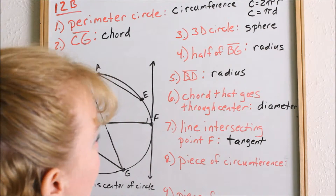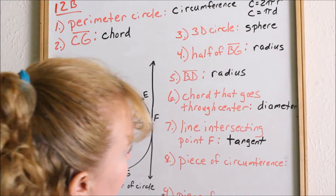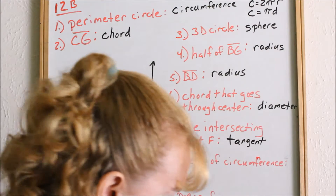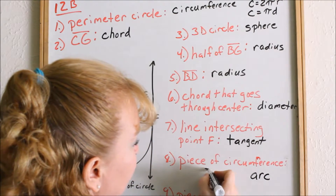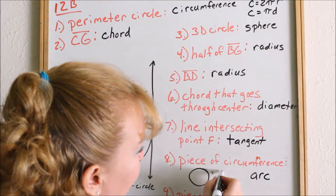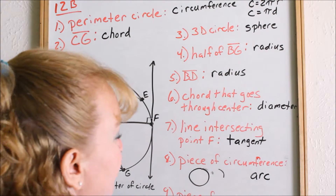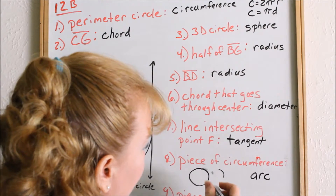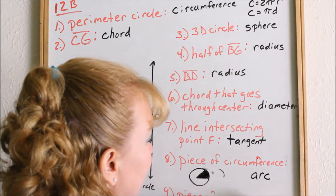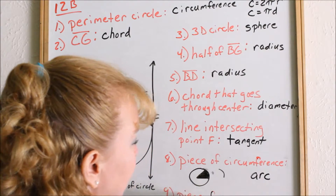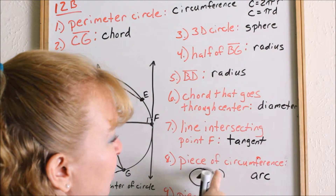Number eight: what do we call a piece of the circumference? A piece of the circumference is called an arc. If I just have a portion of a circle, that piece is called an arc. If I take out a whole chunk of the area of the circle, I call that a sector. A piece of the area — like a piece of pie — is a sector. A piece of the circumference is an arc.